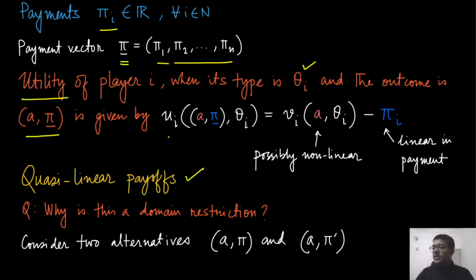So what happens in this quasi-linear payoff? When a player has a type theta_i and the outcome is given by this allocation and this payment vector, then the utility is given by the following expression. As before, we are writing this as x. So this is the consolidated outcome that has been chosen, and theta_i is the type of player i. Now, because this outcome has two components, one is the allocation component and the payment component.